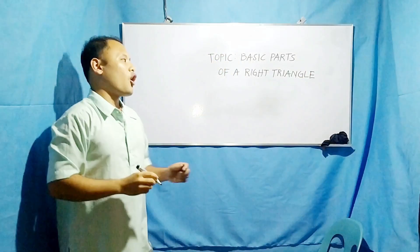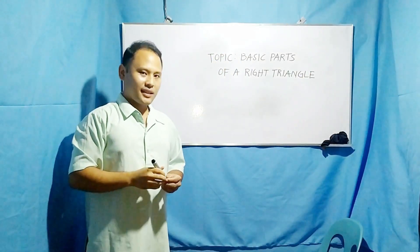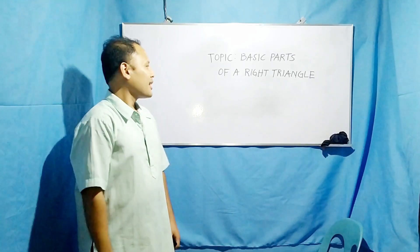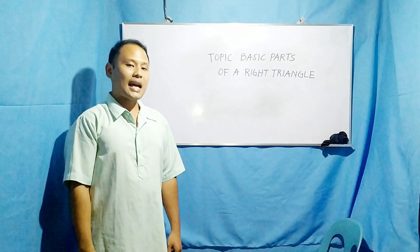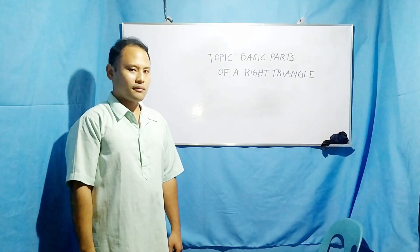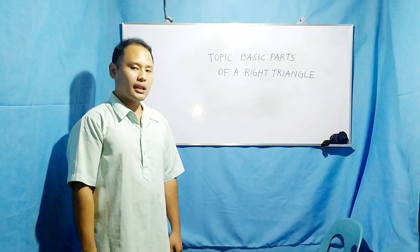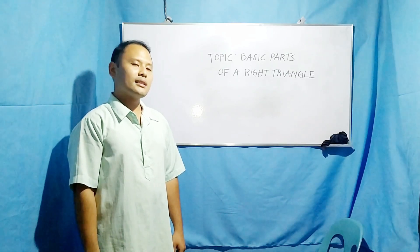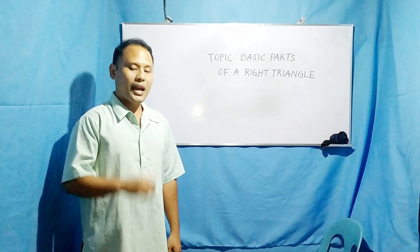This is one of my favorite topics in mathematics and I believe you will like it also. Remember that a right triangle is a three-sided polygon and each side is actually a line segment. By definition, a line segment is the set of points with two endpoints.